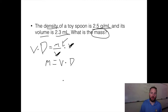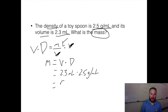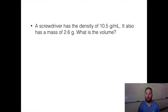Plugging in: 2.3 milliliters times 2.5 grams per milliliter. Multiply those together: 2.3 times 2.5 gives 5.75. That's going to be grams, but we have two significant figures, so we round to 5.8 grams.